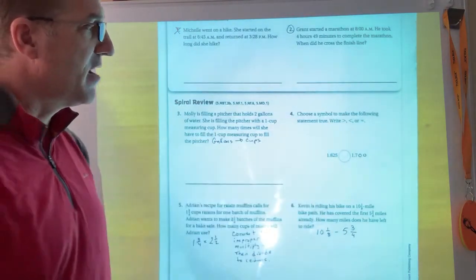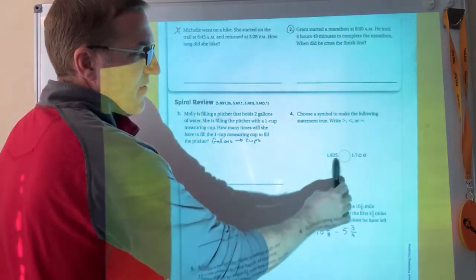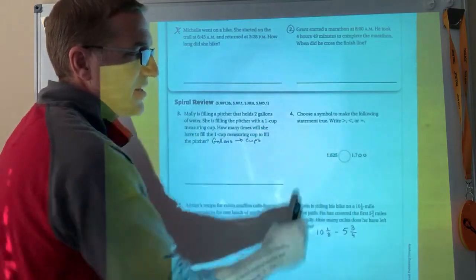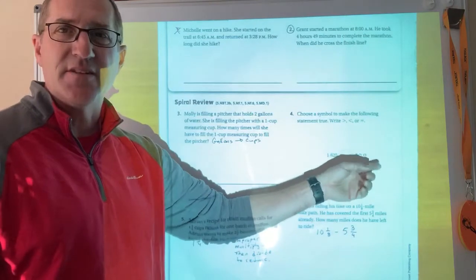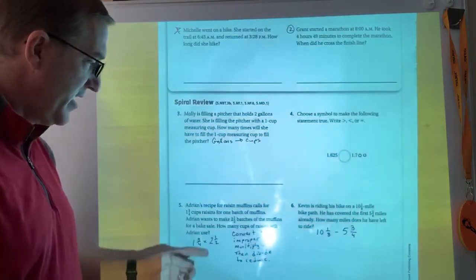Choose a symbol, so which is bigger? I added these two zeros on here. Whenever I get decimals, I want to make sure they have the same number of place values. That's how they try to get you on that. It's a lot easier to see when you add the two zeros on the end.